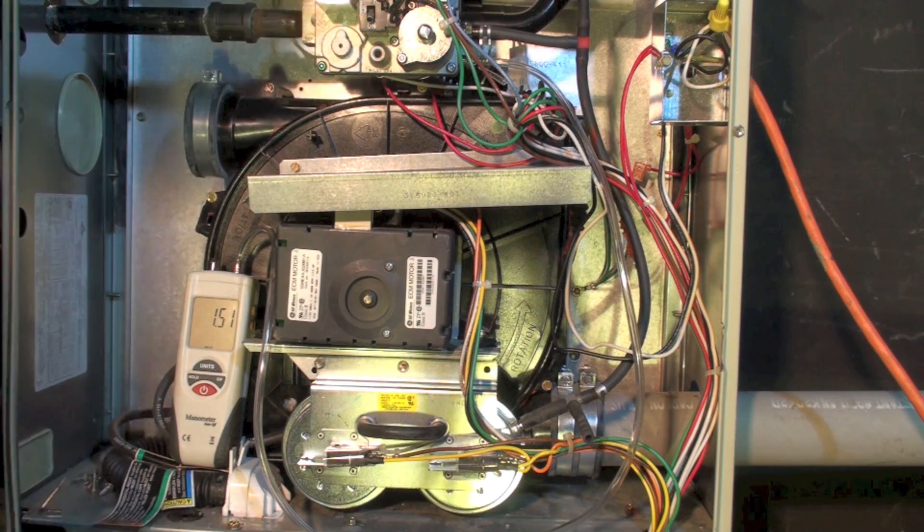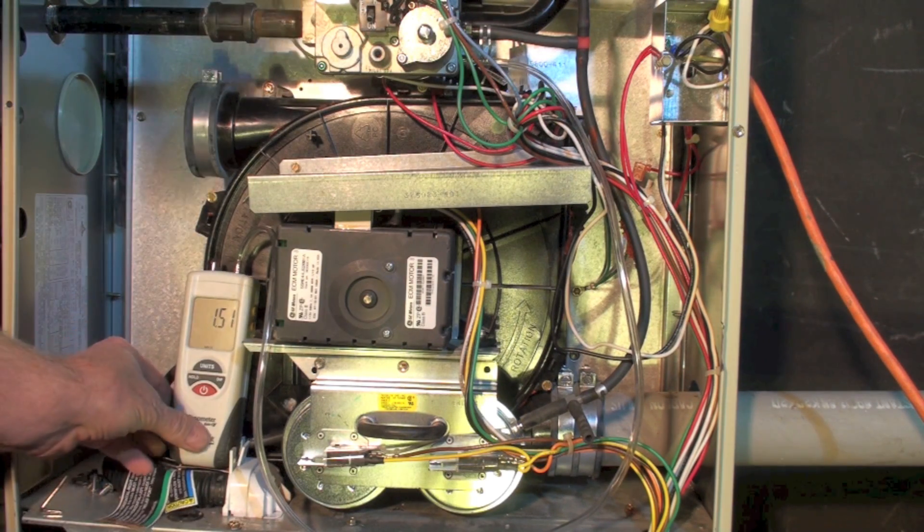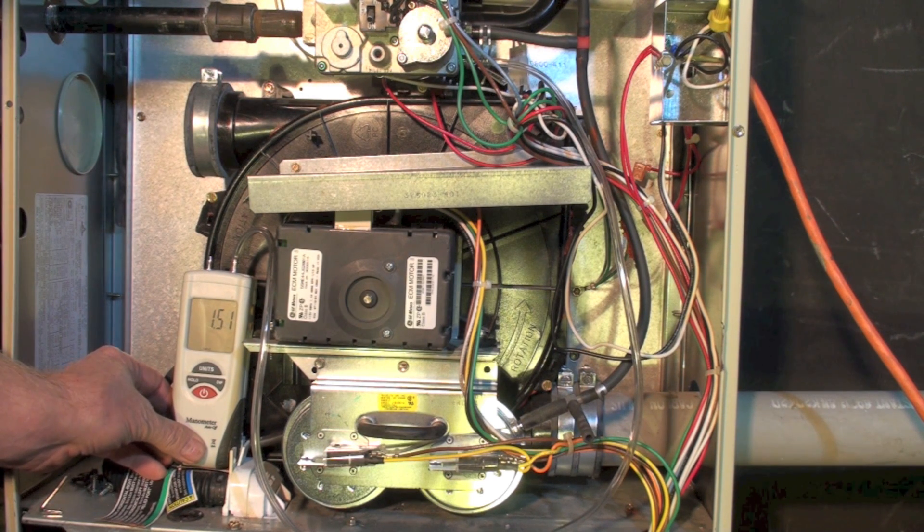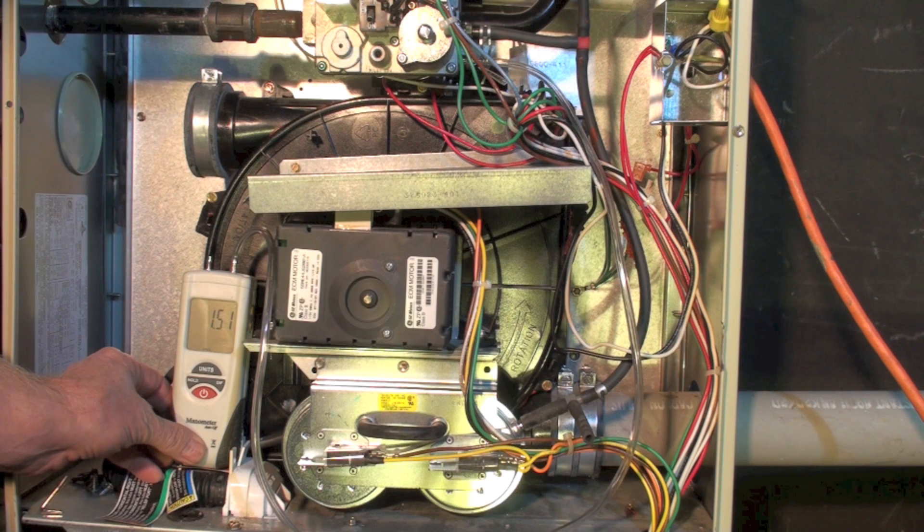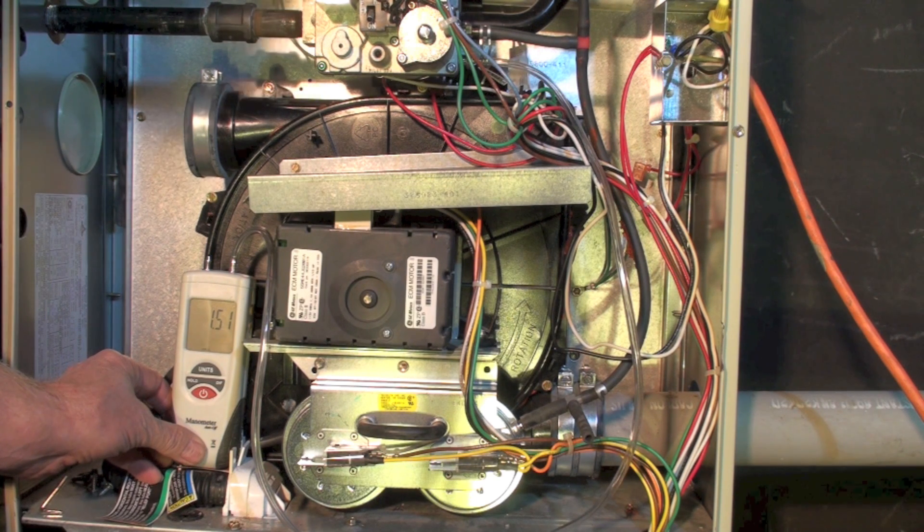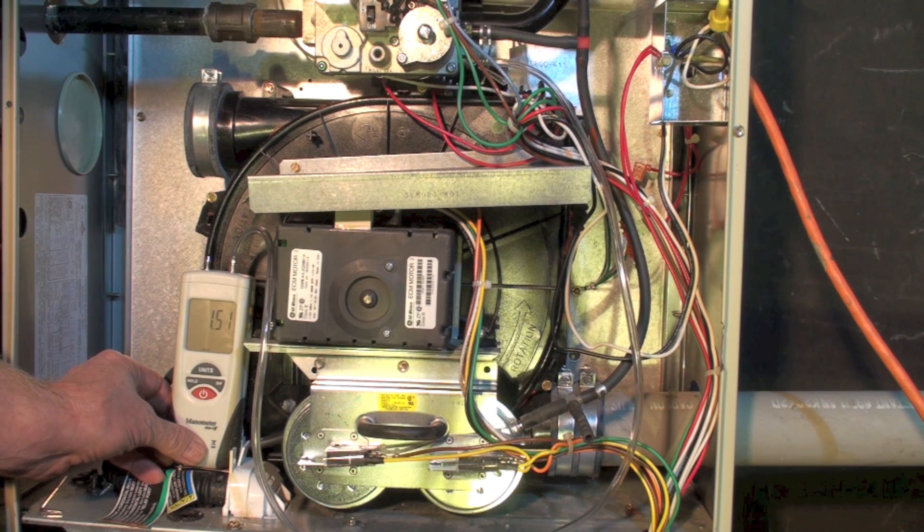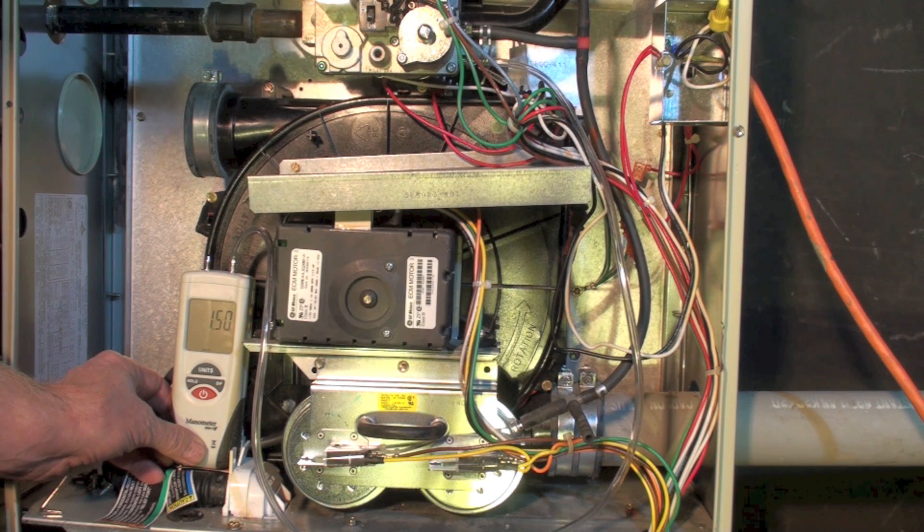Okay, the fan has come on. Now I'm going to jumper from W1 to W2. Now watch your manometer. You'll hear the inducer come up. It takes a little while for this to happen, doesn't happen right away. Now the circulating fan has come up to high speed and the inducer is coming up.